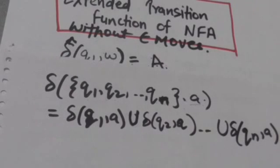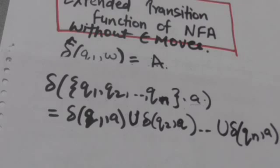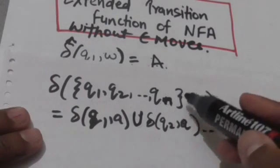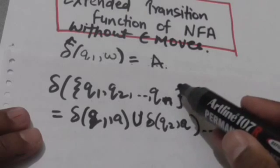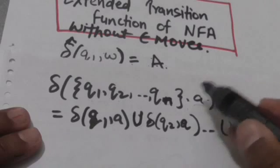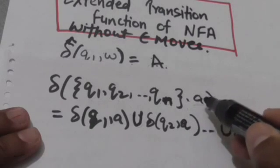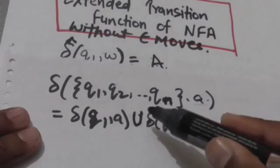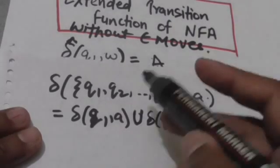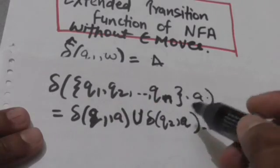Now let's see how we can find the transition of a set of states for a single input symbol. Suppose there is a set of states and we have to find out the transition of this set of states for a single input symbol. We will apply that single input symbol individually to each state of that set and then we will take the union of them.